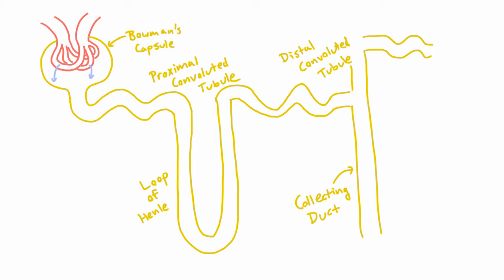This is our nephron, and let's talk about why we need it. If you remember, when we talked about the fluid that gets squeezed out of the glomerulus, we mentioned that some of the things that get squeezed out include amino acids and glucose.